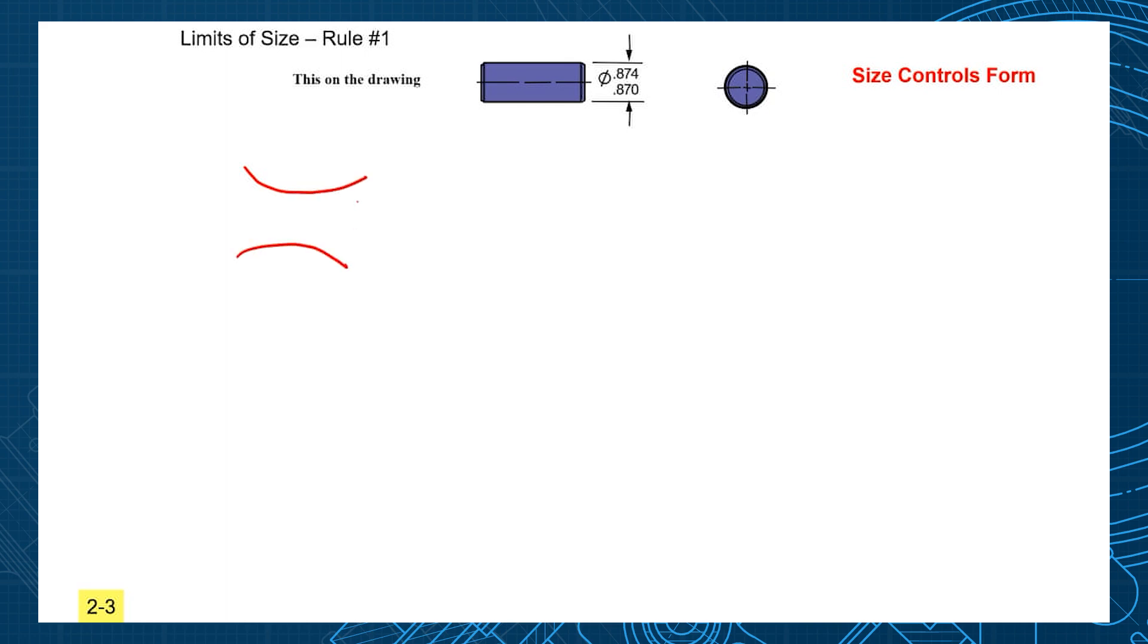How much can this shaft be hourglassed? Well, within the size tolerance, because it must fit inside of an .874 hole - that's our rule. And .870 could be the minimum cross-section, could be wasted within four-thousandths.